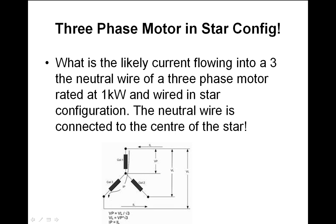Three-phase motor configurations — star and delta. Question: what is the likely current flowing into the neutral wire of a three-phase motor rated at 1 kilowatt and wired in star configuration, with the neutral wire connected to the center of the star? The answer is zero. The rule is: in a balanced system, the neutral should carry zero current.